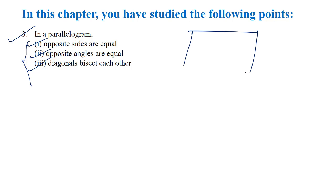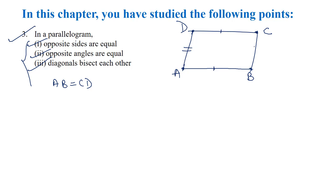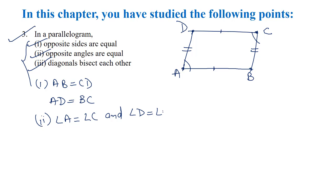If any parallelogram ABCD is given, you can automatically consider these three properties. Opposite sides are equal: AB equals CD, and AD equals BC. Opposite angles are equal: angle A equals angle C, and angle D equals angle B. Diagonals bisect each other: if the diagonals AC and BD intersect at O, then OA equals OC and OD equals OB.